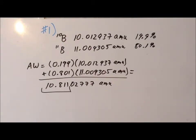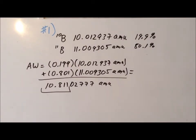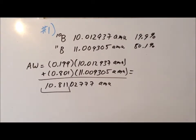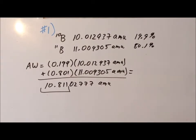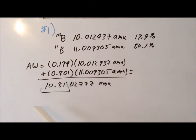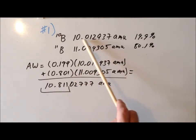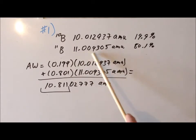A nice way to check your result at the end — especially useful when we have only two isotopes — is to notice that when we took the average of the exam, the lowest possible score students had scored was 80, and the highest score was 100. Whenever we compute an average, the average has to be somewhere between 80 and 100. If we get a number above 100 or below 80, that is a sure sign we've made a mistake. Similarly, if we were to get an atomic weight of boron that is lower than 10.012 or greater than 11, that's outside the range of the two values, and we know immediately that we must have made a mistake in our calculation.